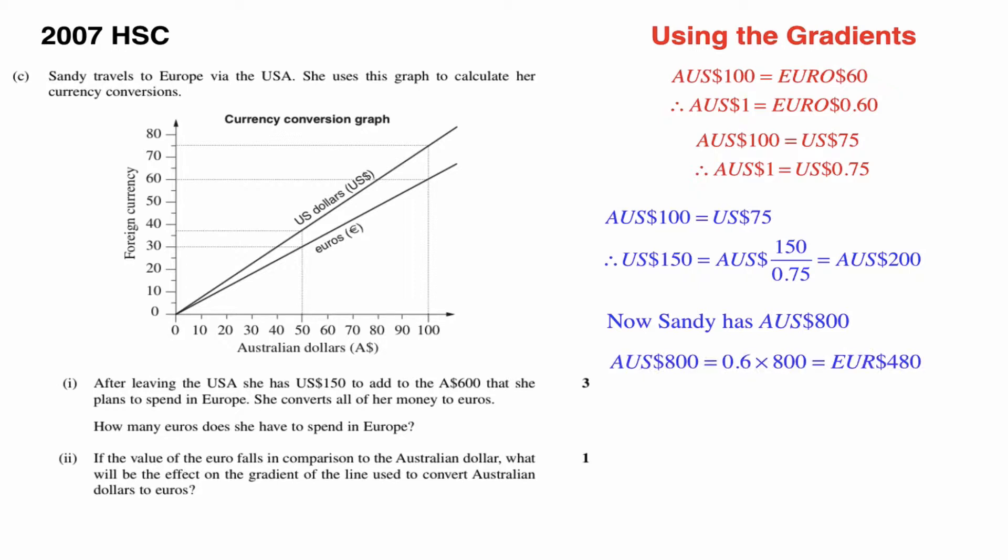So 800 Australian dollars, to convert that to Euros, well, one Australian dollar is worth 0.6 of a Euro, so we simply multiply by 0.6 to get $480. So the answer to part one, how many Euros does she have to spend? 480.